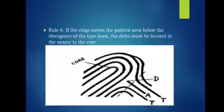Rule 6: if the ridge enters the pattern area below the divergence of the type lines, the delta must be located nearer to the core. In this figure, we have type lines, a ridge that enters the pattern area, and the point of divergence. Unlike Rule 5, the delta is located at the end nearer to the core — letter D is the chosen delta.